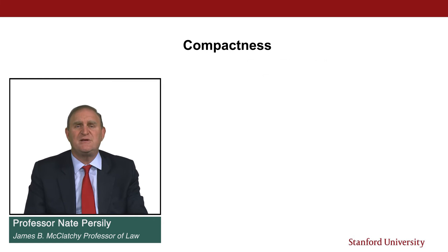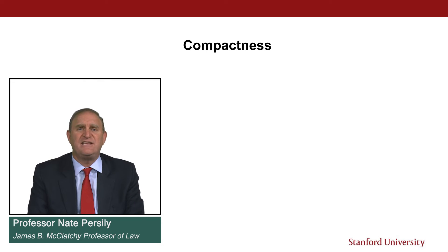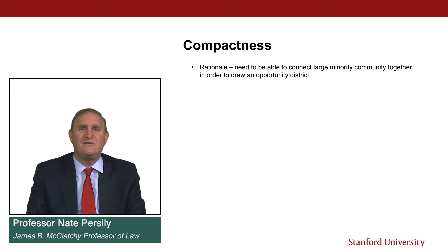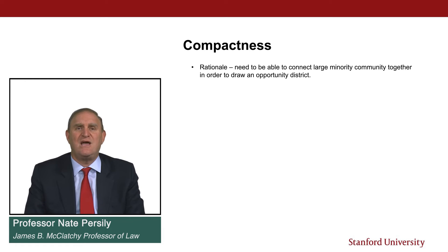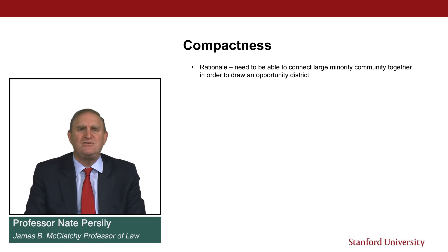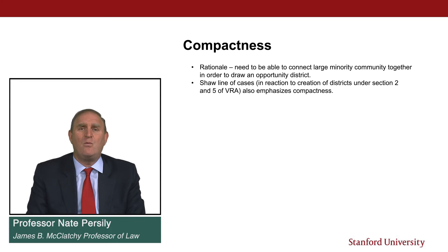What about compactness? The requirement is that a minority community must be geographically connected enough to draw a minority opportunity district. If you have pockets of voters scattered in corners of the state and the only way to draw them together would be a very strangely shaped figure going from one corner to the next, that is not required by the Voting Rights Act. This is consistent with constitutional wrongful districting cases under Shaw versus Reno, which also emphasizes compactness — but that's a conversation for another lecture.